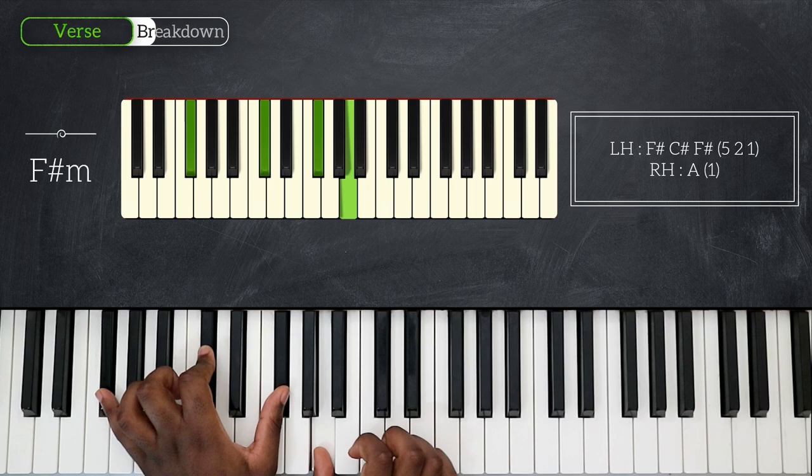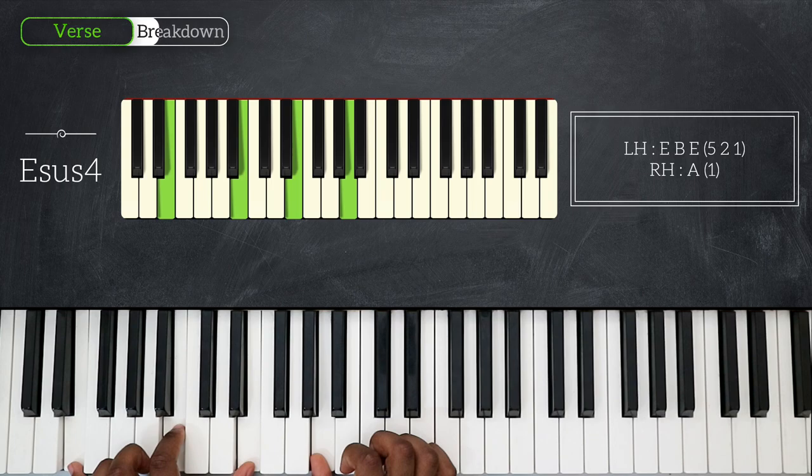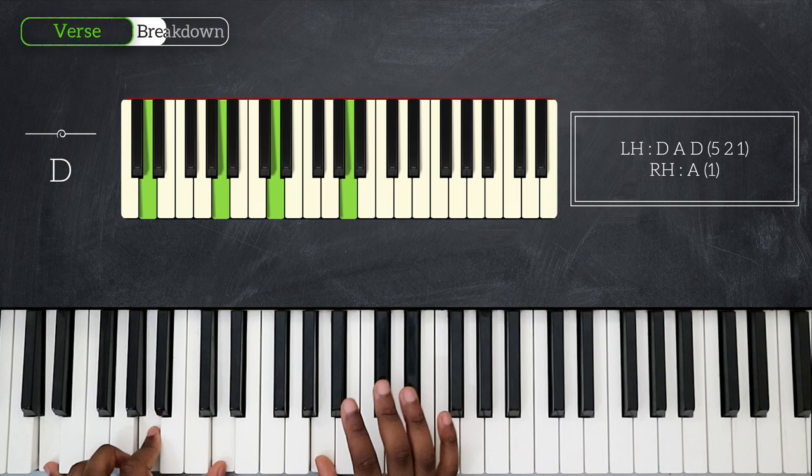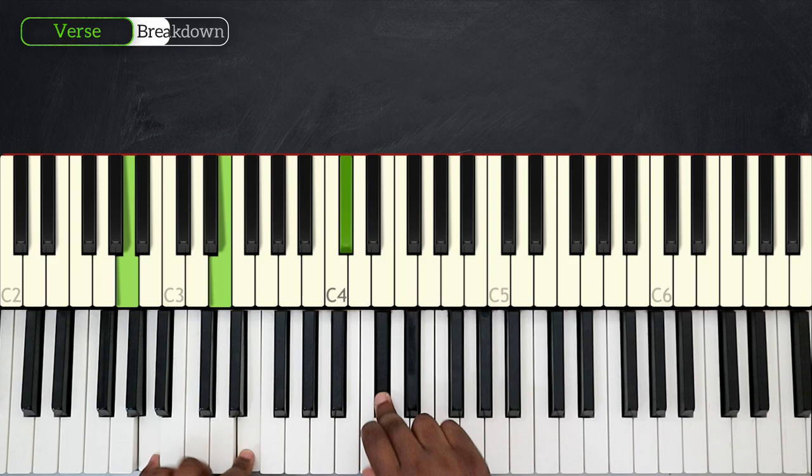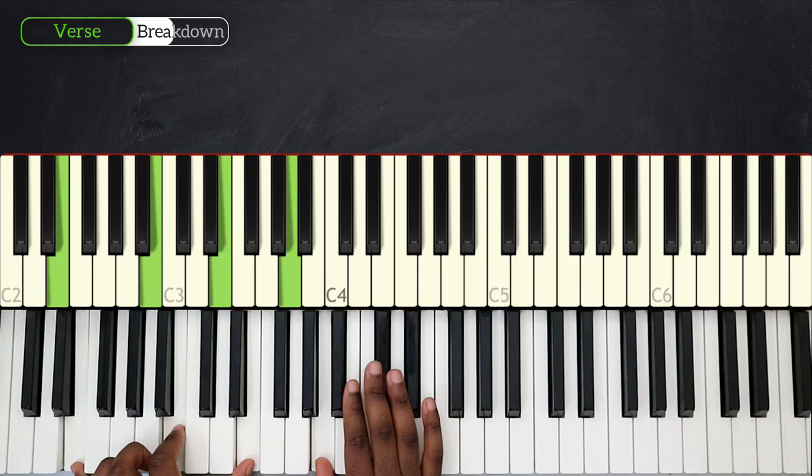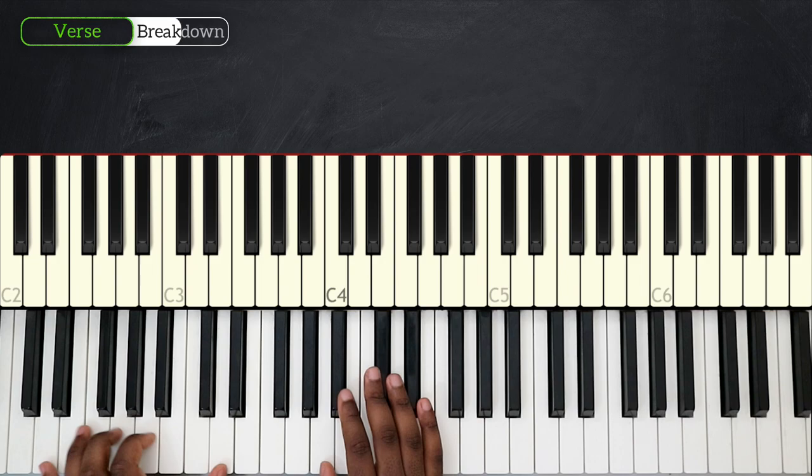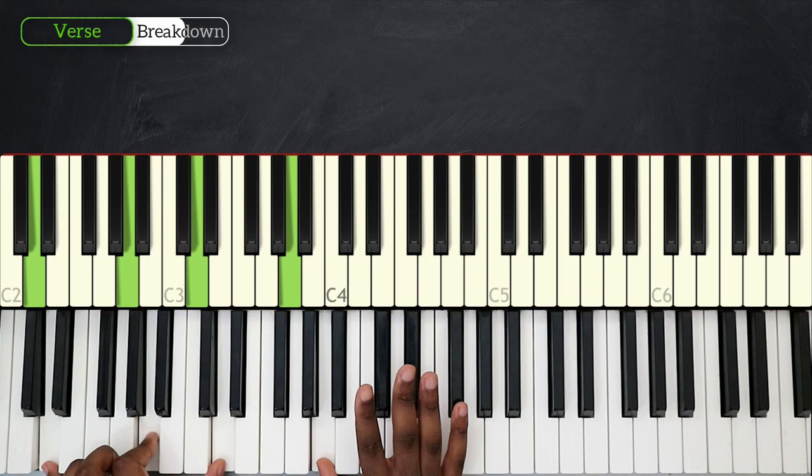Then go down on E sus4 and D major. So that's the progression we're going to use for the first verse, and we're going to simply repeat it. So from the top, you have A major, E sus4, going to D major, then F sharp minor, E sus4, and then D major again. We're going to play it twice to complete the first verse.